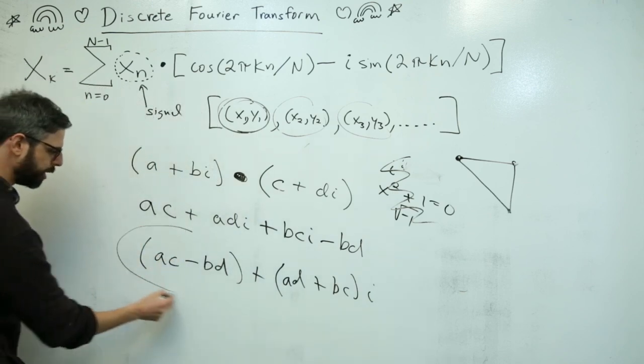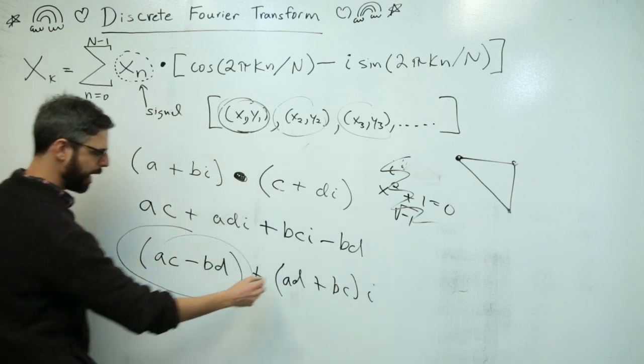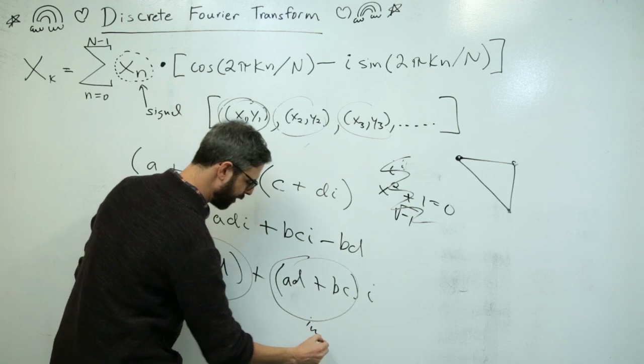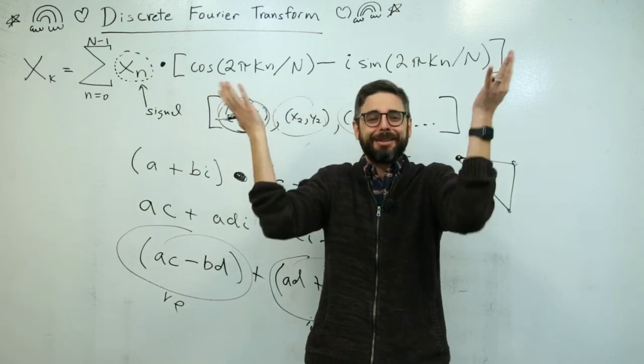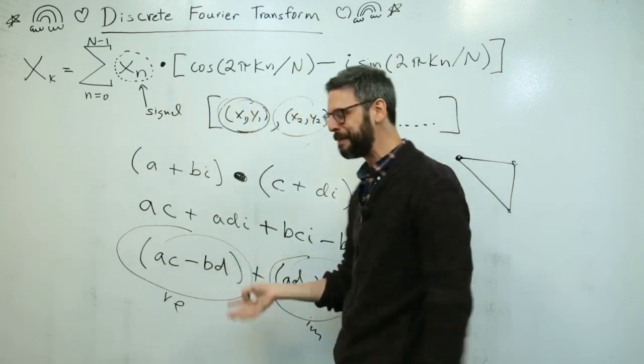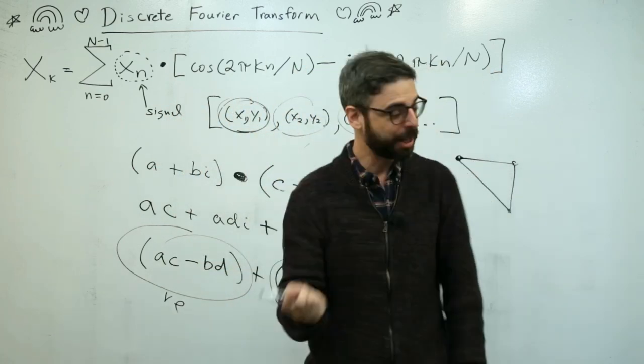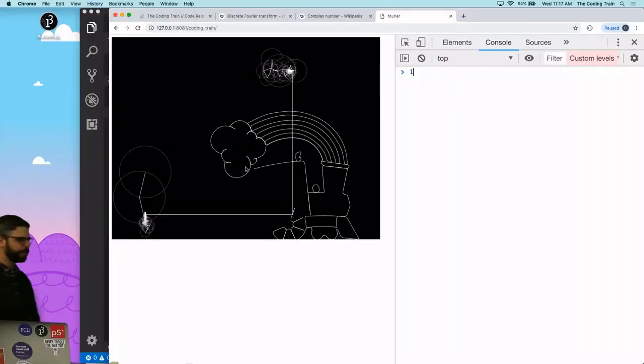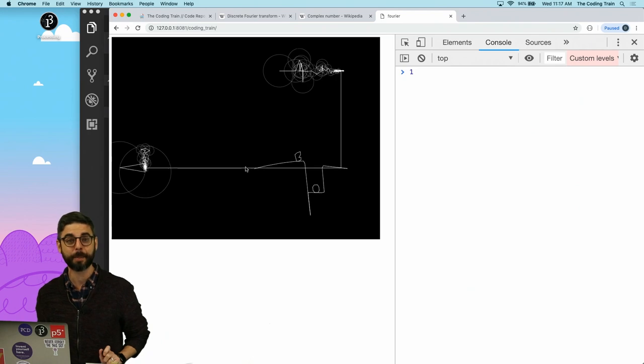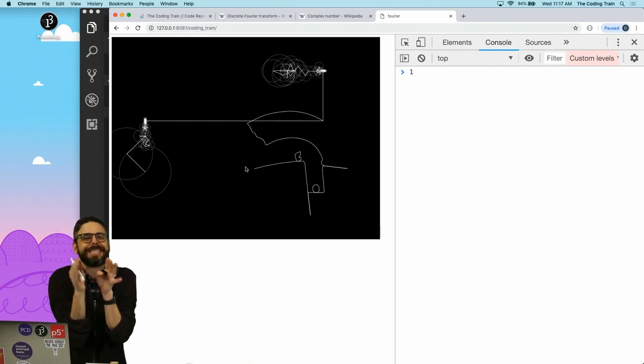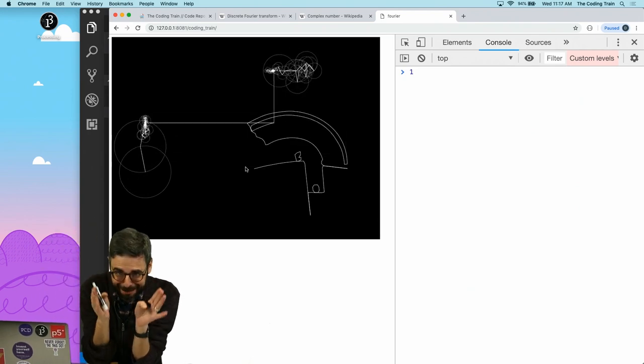By the way, somebody pointed out that the traditional way you might see this written is like, i is the solution to x squared plus one equals zero. You can see that's the same thing. x squared equals negative one. Or you can also think of it as the square root of negative one, although somebody on a YouTube comment I had earlier said that's not a good way to describe it, but whatever. This is negative one. So guess what? This becomes negative one, which means this is just a minus. And now a complex number is real and imaginary components. What's the real component? The real component is ac minus bd, and the imaginary component, also I could pop out that distributive property again, is ad plus bci. So this is the real component, and this is the imaginary component.